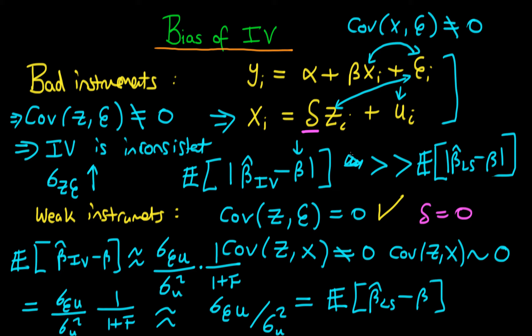In other words, z is not important for determining x. So our instrumental variables bias is centered on the bias of the least squares estimator in the circumstance when delta equals zero — that is, when we have a weak instrument.